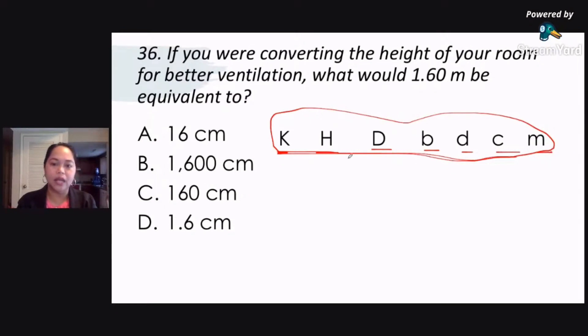Again, that's King Henry died by drinking chocolate milk. And this would all represent your units, your prefixes for your metric units. So, this is kilo, hecto, deca. Do not be confused with the capital letter D and the small letter D.